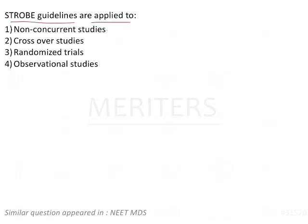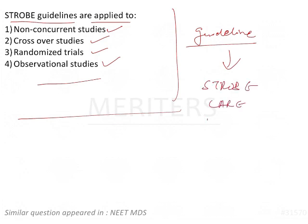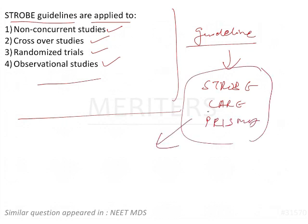Stroke guidelines are applied to non-current studies, crossover studies, randomized trials, and observation studies. Each study has a specific set of guidelines. These guidelines are formulated to regulate the studies — for example, STROBE guideline, CARE guideline, and PRISMA — these are sets of rules followed to do epidemiological studies.